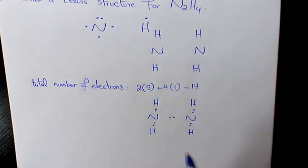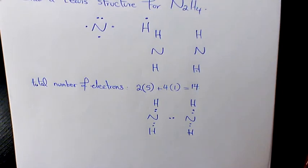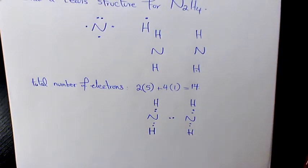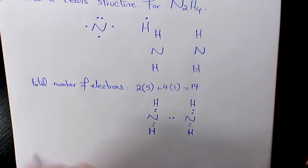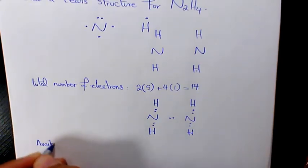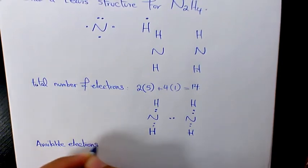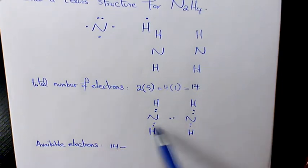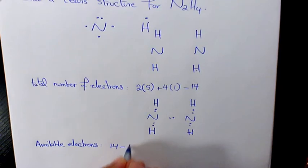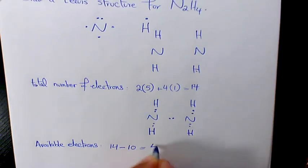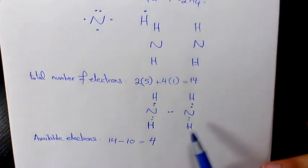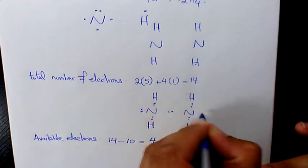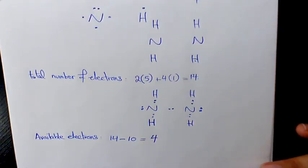Now we need to place pairs of the remaining valence electrons as lone pairs on the surrounding atoms, not on the central atom. But since we are dealing with hydrogen as surrounding atoms, we need to follow the duet rule for hydrogen — they need a maximum of 2 electrons, so we don't place anything on hydrogen. The available electrons now is total minus whatever we used so far: 14 minus 10 equals 4. So we need to place these 4 electrons on the central atoms — 2 here as a lone pair and 2 here as well.